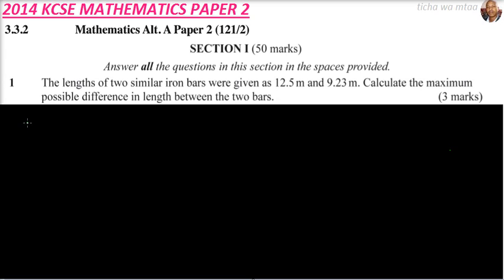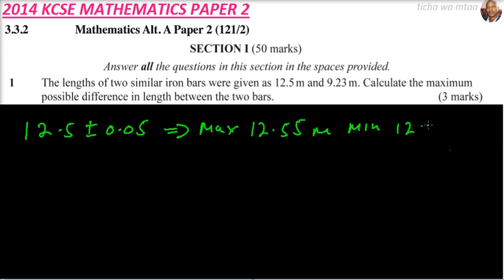So we have one of the bars is 12.5 meters. The precision is 0.5, so we can say this is plus or minus 0.05. This implies that maximum it is 12.55 meters, minimum it is 12.45 meters. I'm just doing this for you to understand. Otherwise, it is not all that necessary during the exam.